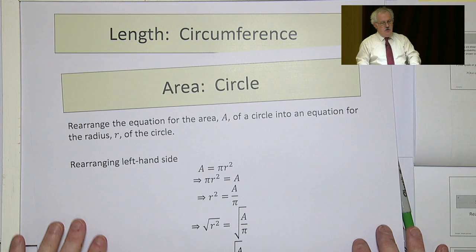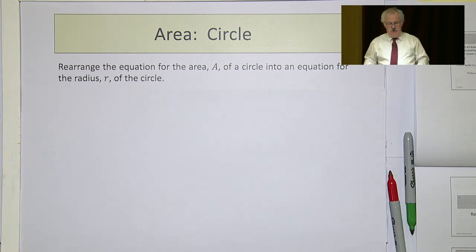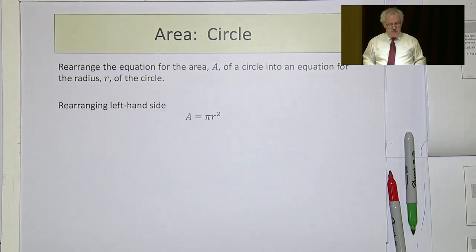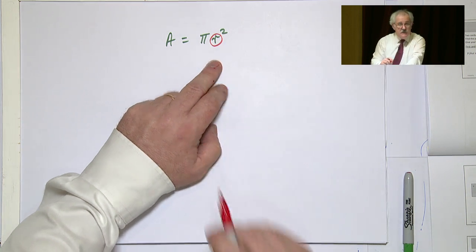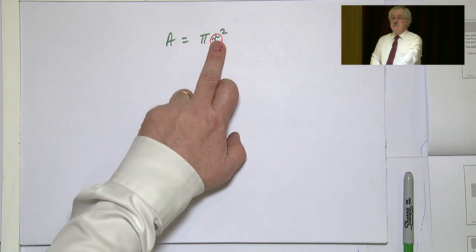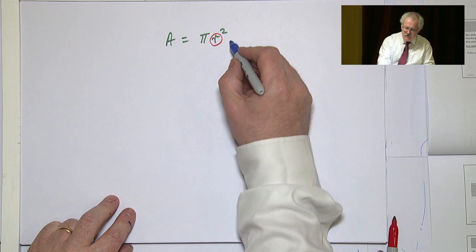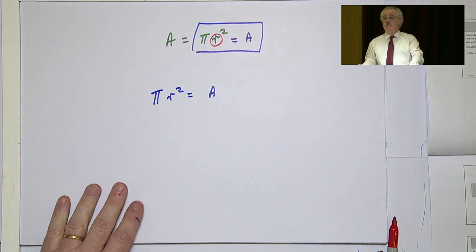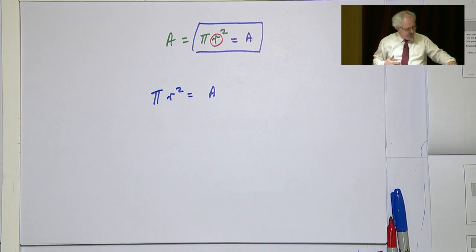We use the same technique again and again — all we're doing is manipulating algebraic expressions and turning them around. Here's a standard form for a circle: rearrange the equation for the area A of a circle into an equation for the radius. In your tables, A = πr². We're interested in the variable r — not r squared, just r. At the moment it's squared, multiplied by something, and on the wrong side. So we start by moving it and putting it equal to A.